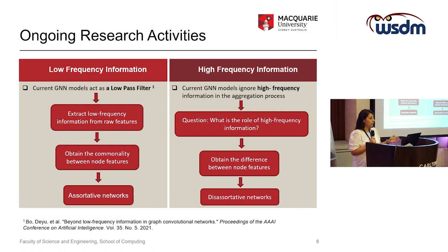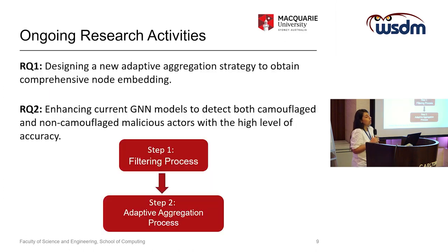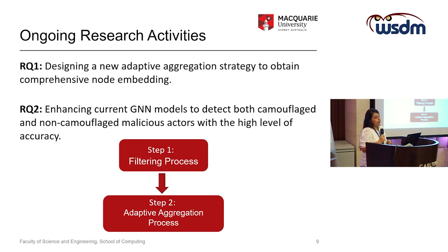Inherently, a question arises: what is the role of high-frequency information in the aggregation process? Existing GNN models typically ignore it. We are interested in investigating this problem — we need to obtain the differences between node features, which seems much more suitable for disassortative types of networks. So we investigate two research problems: first, designing a new adaptive aggregation strategy to obtain more comprehensive node embeddings; and second, how we can use this strategy to enhance current GNN models to detect both camouflage and non-camouflage fraudsters.